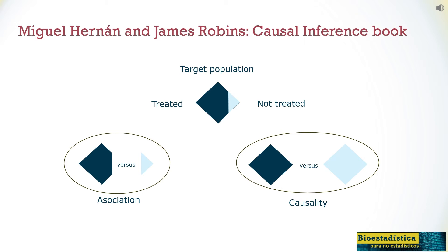We already saw that the clinical trial used random samples to solve this problem. The important thing now is to differentiate between association, which can serve to predict the future, and causality that in addition allows to change it.